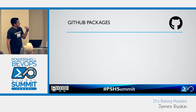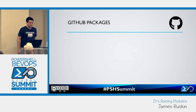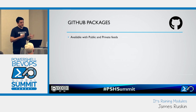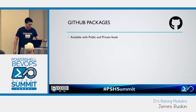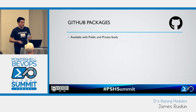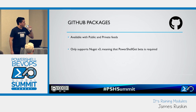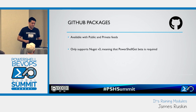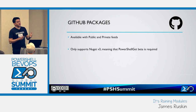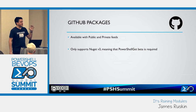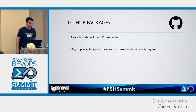Using GitHub Packages' feed seems like an excellent choice if you want to secure your stuff — it does allow for public and private feeds. However, and this is going to be a running theme, it requires that you use a PowerShell Get pre-release version, because it only supports NuGet v3 currently. Similarly, you'll need to ensure that any dependent modules are uploaded to that feed before you can install from it.